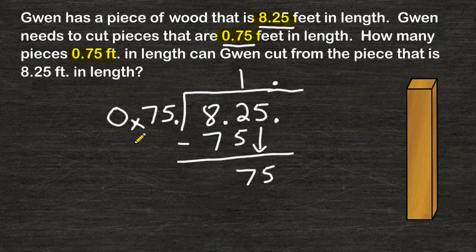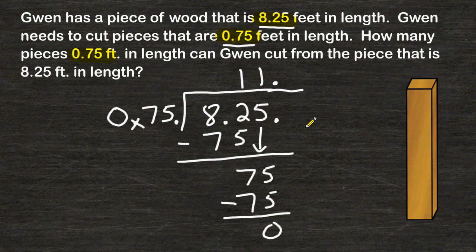And now we divide 75 into the number 75. Of course, any number can fit inside itself exactly one time. So we must write a 1 in this location. And 1 times 75 is 75. And because we have no remainder, we are finished with our division. So we have figured out that Gwen can cut 11 pieces of wood that are 3 quarters of a foot long from her original piece of wood.